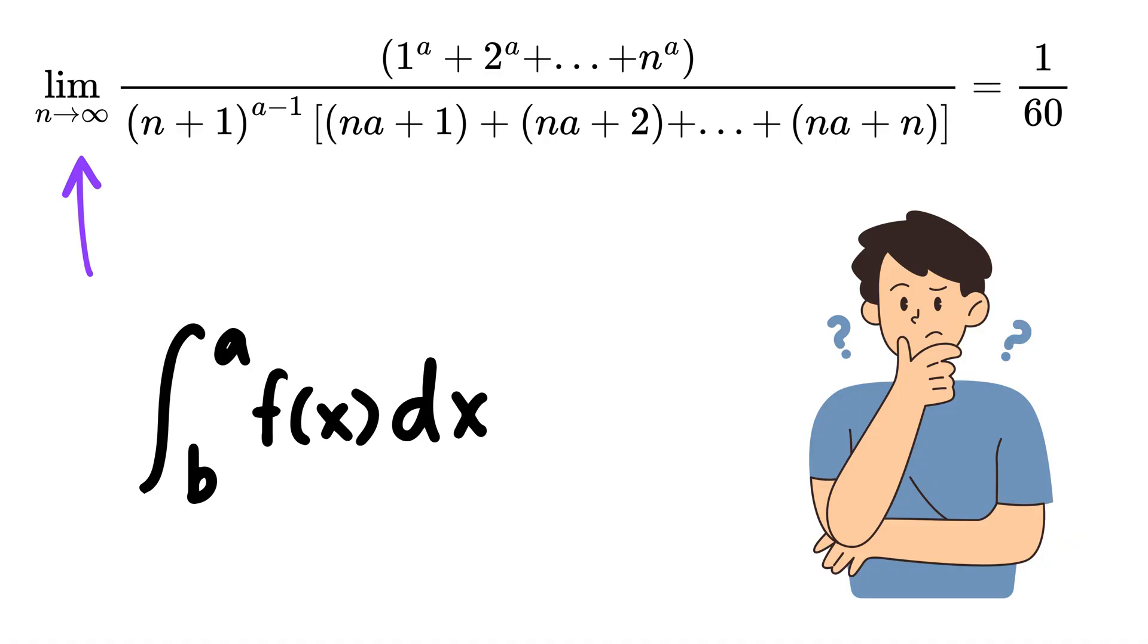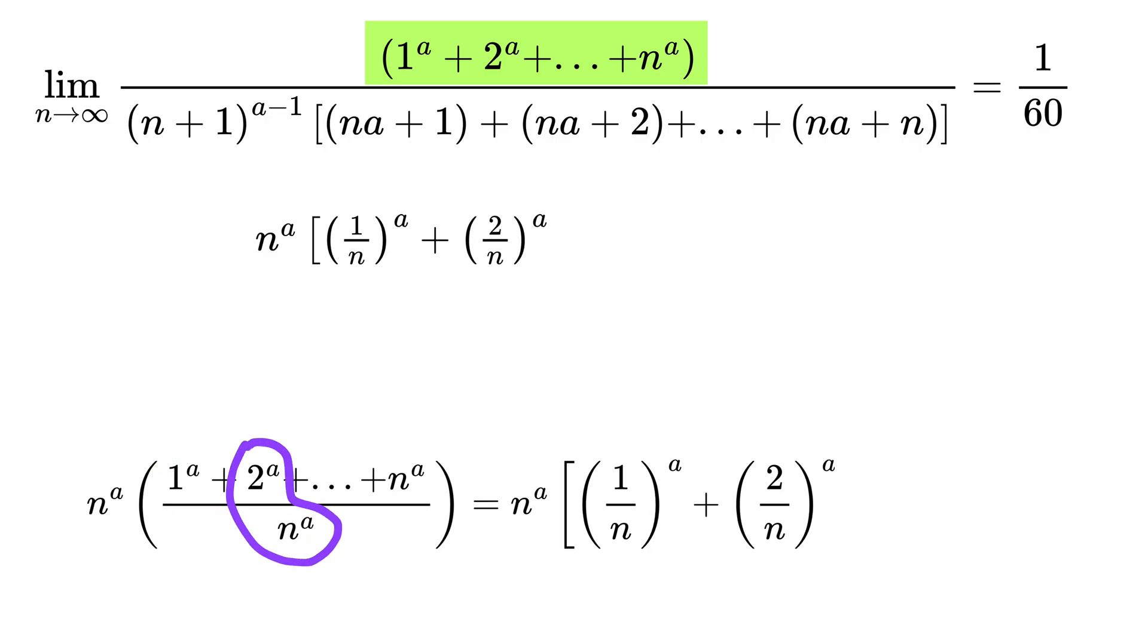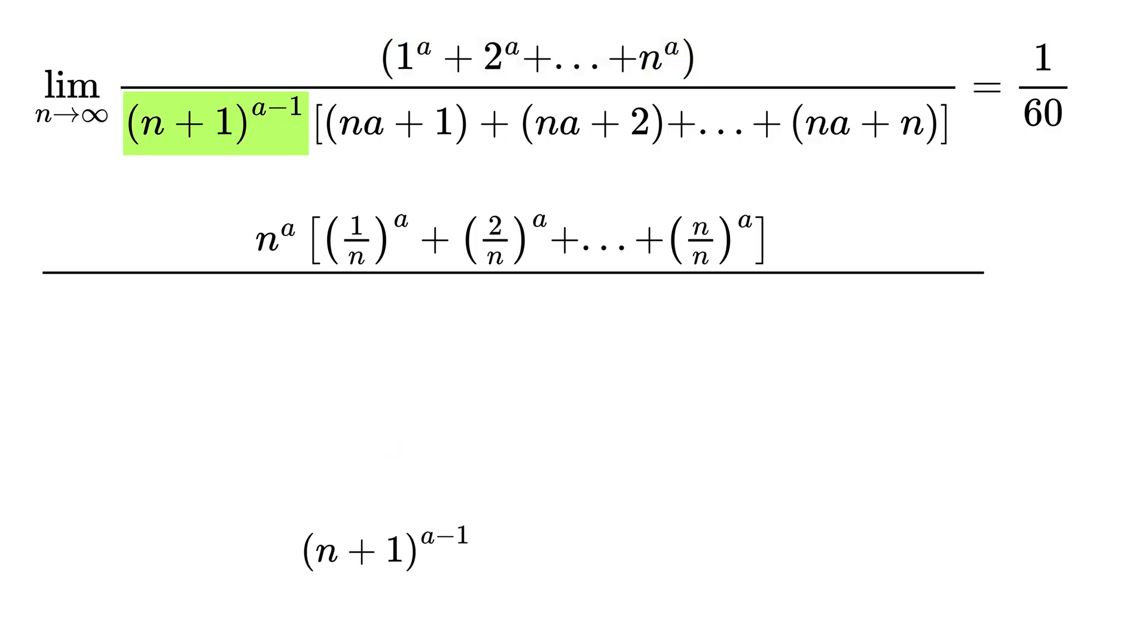Let us see how. First, consider this numerator. Multiply and divide it by n raised to the power a to rewrite this as n raised to the power a times: this will become 1 by n raised to a plus 2 by n raised to a and so on till n by n raised to a.